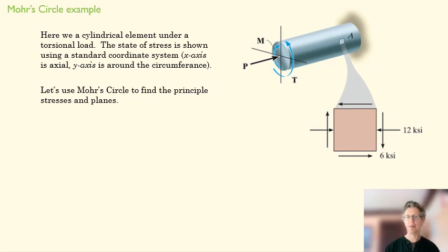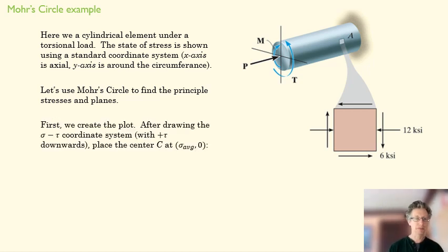Let's use Mohr's circle. Get a sheet of paper out and see if you can sketch this. We're going to start by creating a plot, draw your coordinate systems, your x and your y axis. And remember that your shear is going to be positive downward.